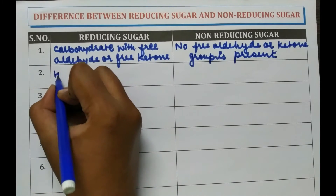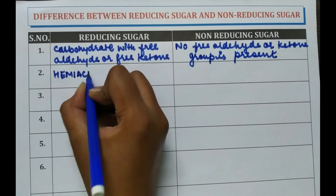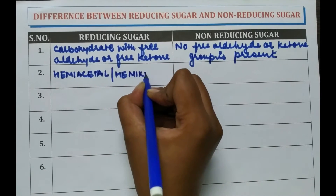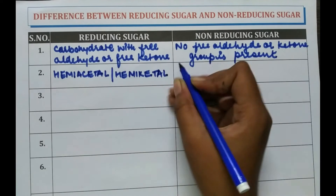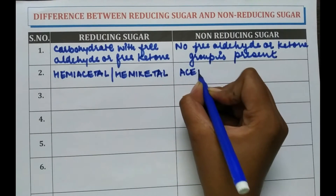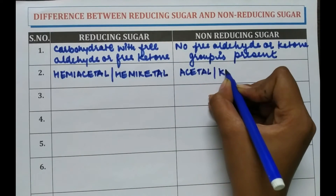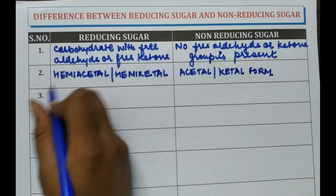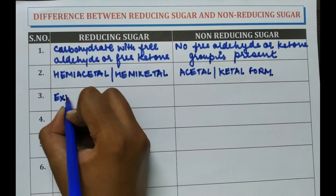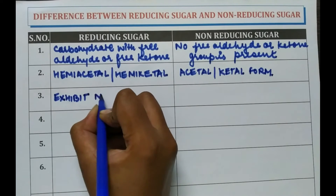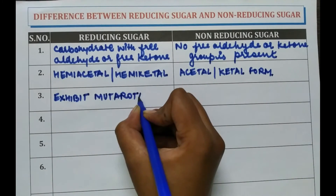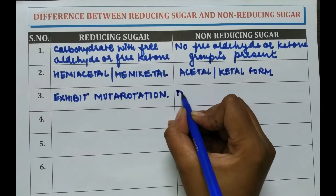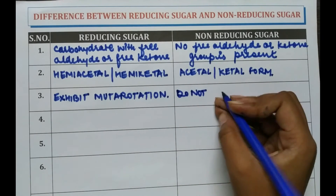Reducing sugars are in hemiacetal or hemi-ketal form. Whereas, non-reducing sugars are in acetal or ketal form. Reducing sugar exhibits mutarotation, whereas non-reducing sugars do not exhibit mutarotation.